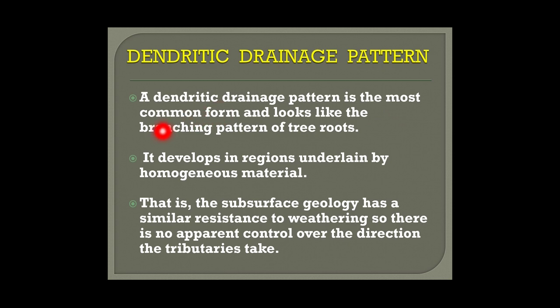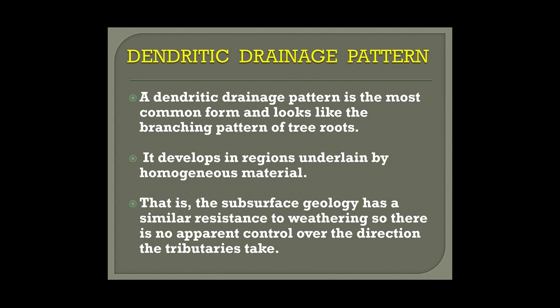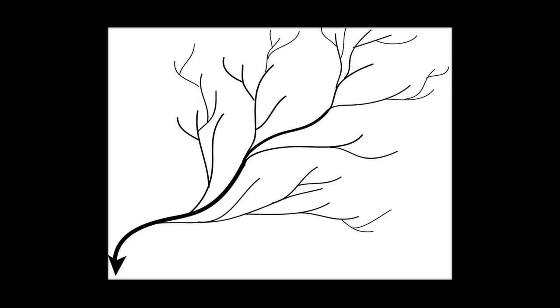The first drainage pattern is the dendritic drainage pattern, the most common form, which looks like the branching pattern of tree roots. This is the main river; you can see the arrowhead showing the direction of flow, with tributaries and sub-tributaries joining it. This type of drainage develops in regions underlain by homogenous material where the subsurface geology has similar resistance to weathering, so the rocks have not controlled the drainage pattern.